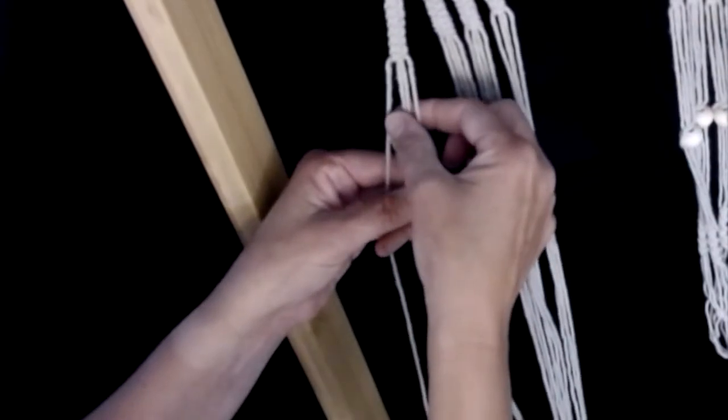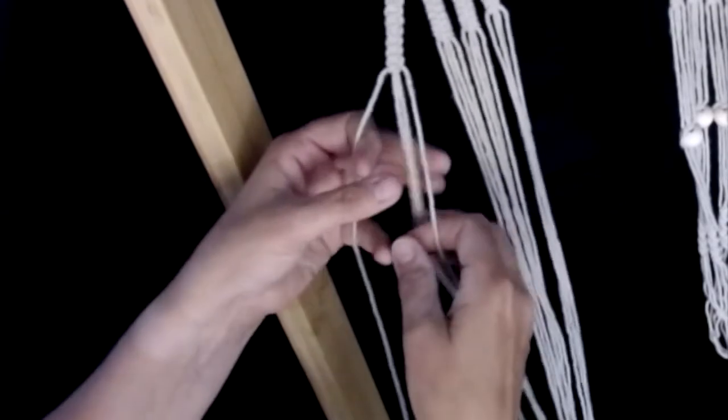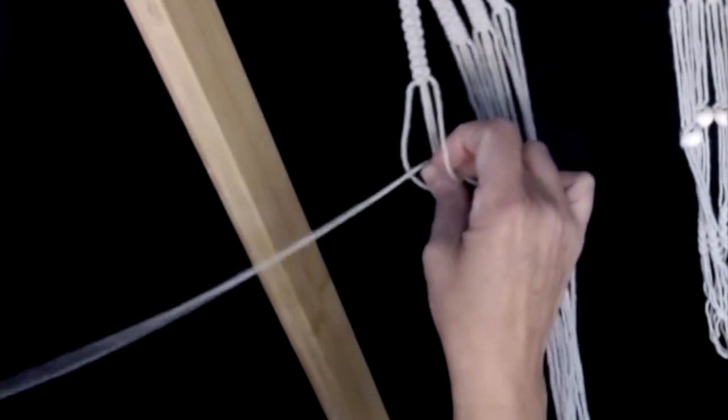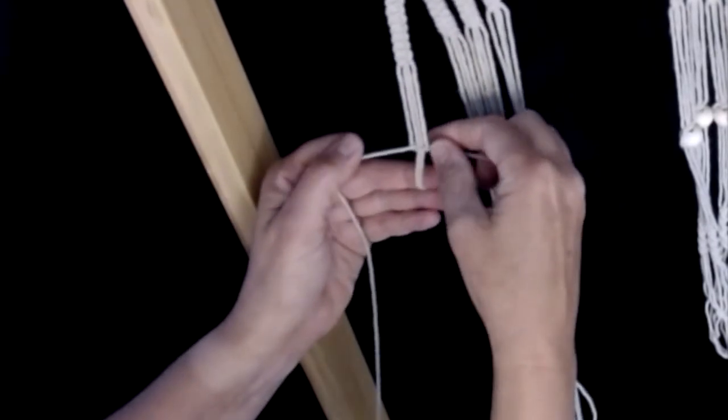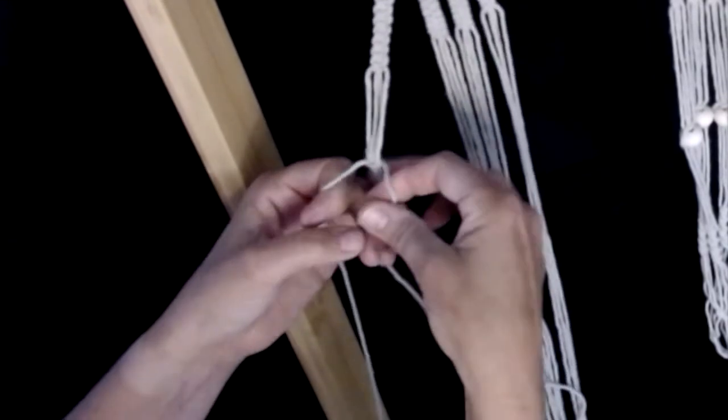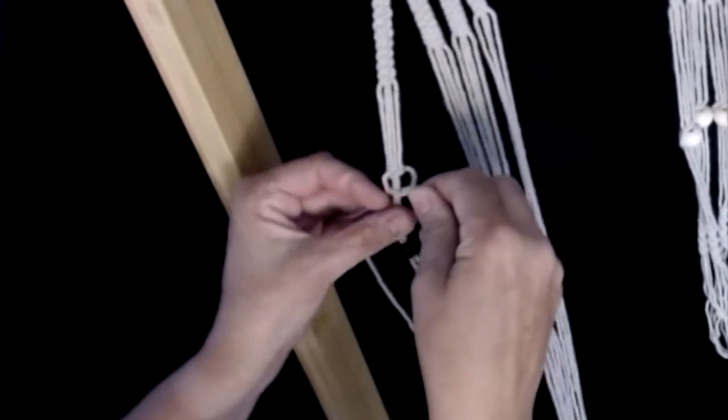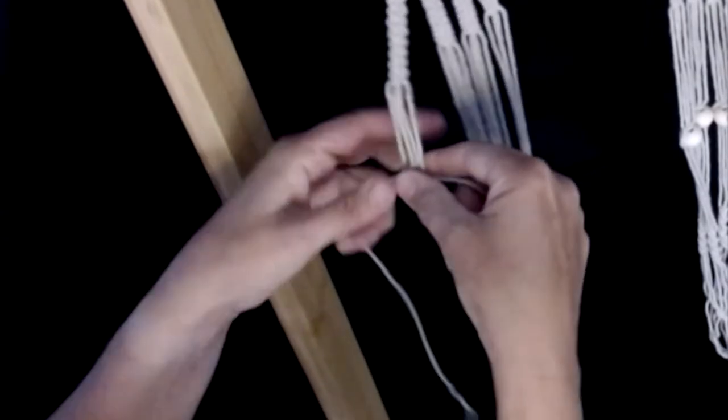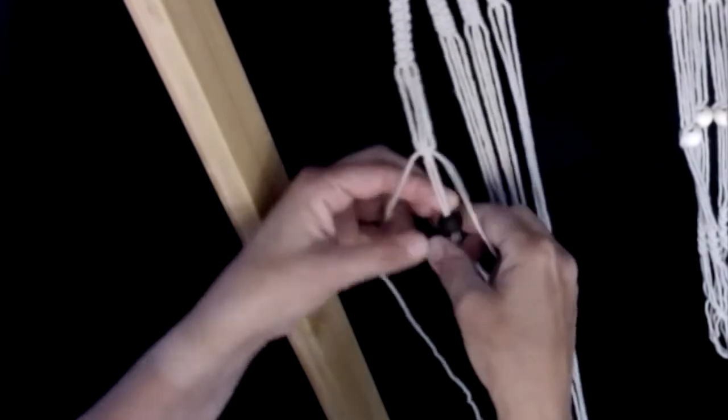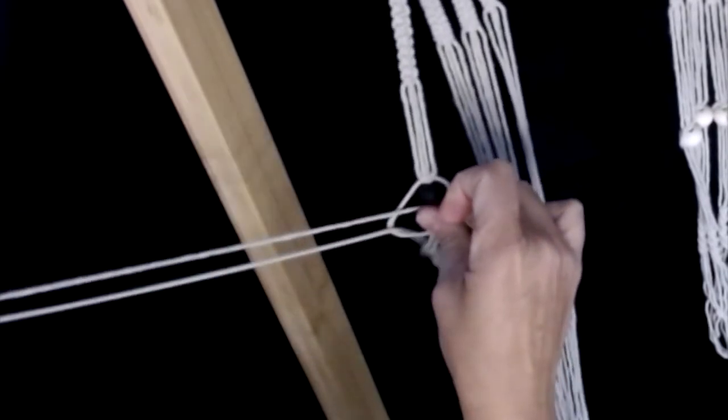I'm going to put one square knot above my bead and one square knot below my bead. So I'm going to start with deciding how long I want my gap to be. So I'm going to go about there. Square knot, so one on the left and one on the right. Tighten my square knot. Slide my bead up and place another square knot below my bead.